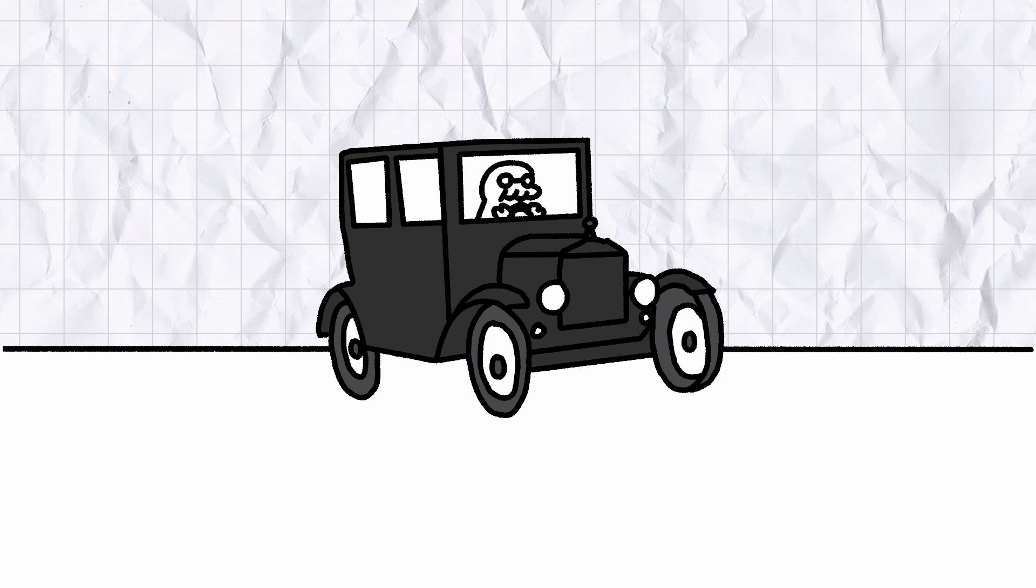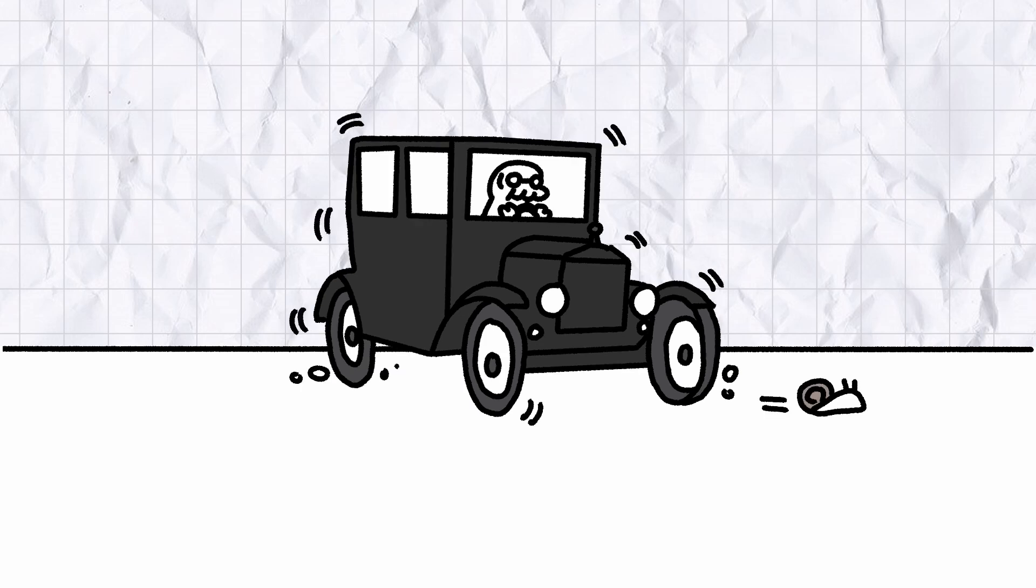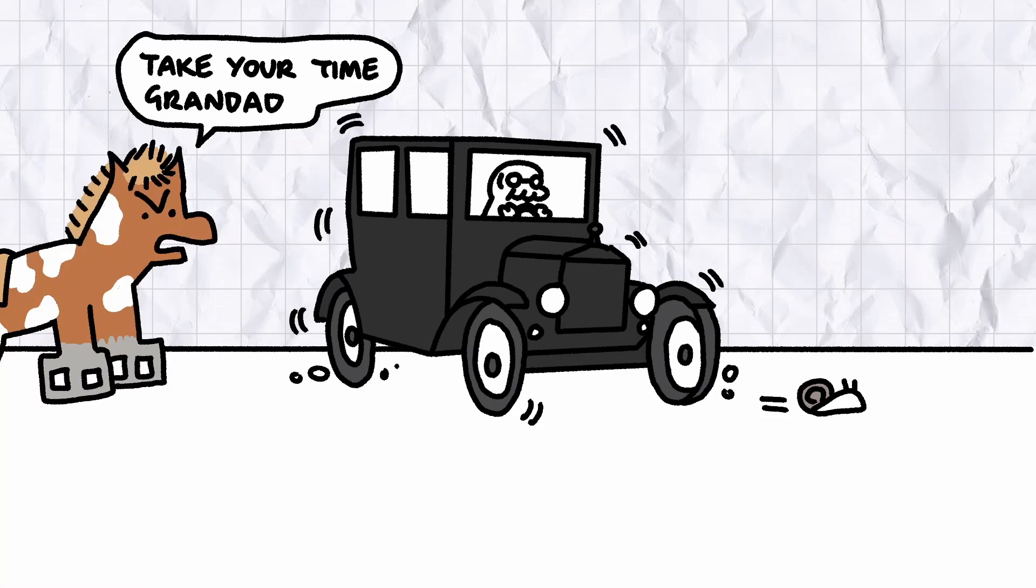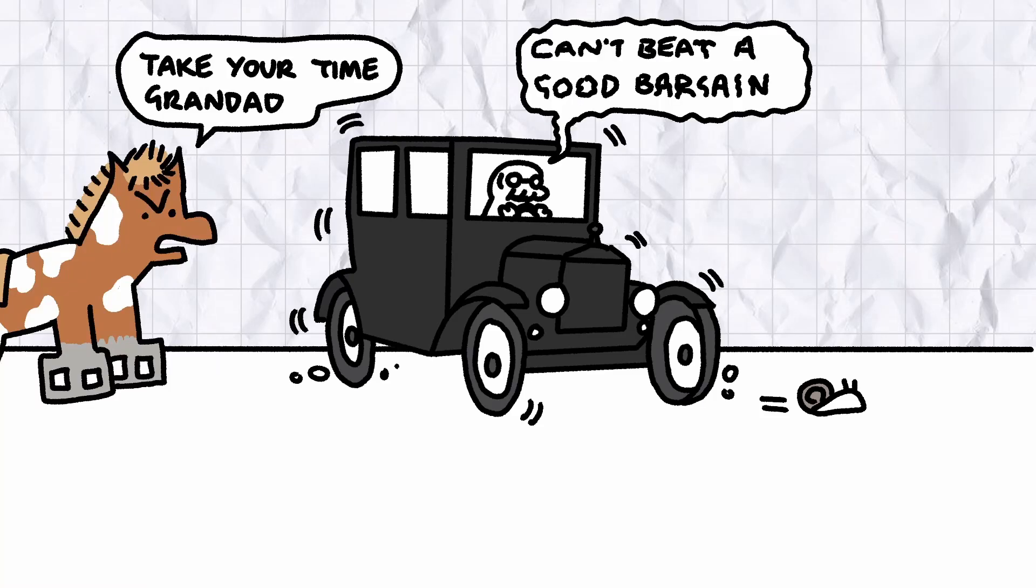The earliest versions of the Model T had a top speed of 45 miles an hour, rattled uncomfortably over dirt roads and handled about as well as a Shetland pony with cement blocks where its hooves should be. But what gave the Model T its killer edge was its price.